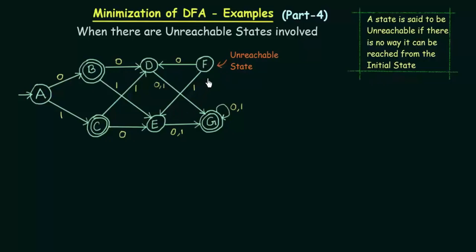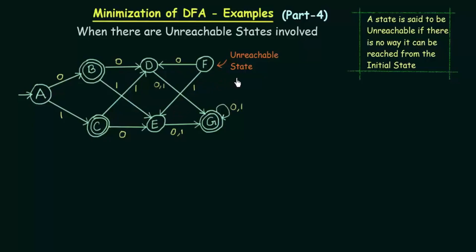In the DFA that we have here, F is called an unreachable state. That is because there is no way in which F can be reached from the initial state A. There is another way in which you can easily identify an unreachable state: unreachable states will only have outgoing transitions and will not have incoming transitions. If you observe here, the state F has outgoing transitions for 0 and for 1, but there are no incoming transitions — nothing comes into F. That is how you can easily identify an unreachable state.